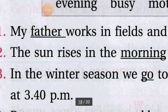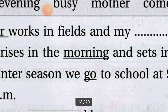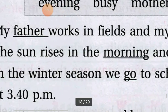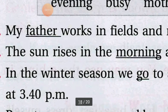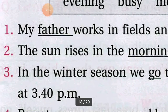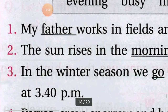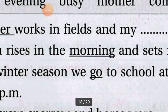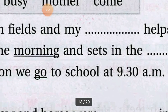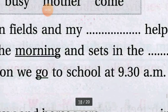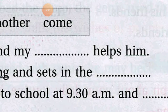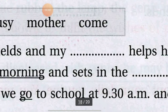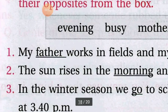Now coming to the second question. The sun rises in the morning and sets in the dash. Here it is said that the sun rises in the morning and sets in the blank. Your opposite word is of morning — morning jiske niche underline kiya gaya hai. Surya subha mein uday hoota hai aur sandhya mein ast hoota hai. So you have to write Evening — E-V-E-N-I-N-G. Evening ka matlab hota hai sandhya. The sun rises in the morning and sets in the evening.